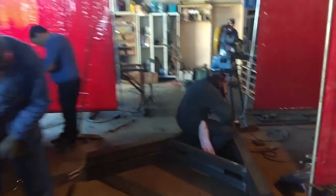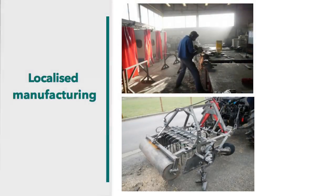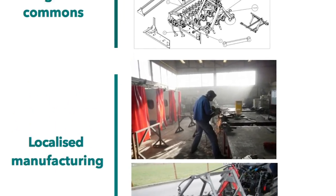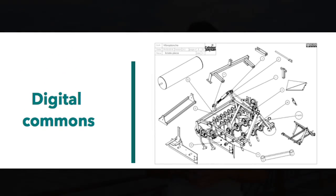Another example: small-scale farmers rarely find appropriate machinery to support their work. So a community of small-scale farmers in France has designed and manufactured its own agricultural machines. This community shares its designs with the world as a global digital commons. Another community from the US has done the same. These two communities have connected and created synergies by improving the same digital commons.